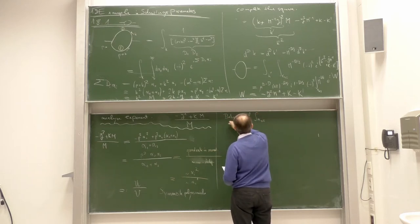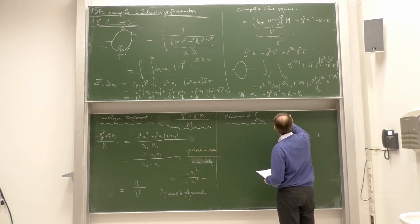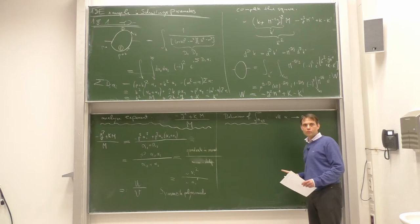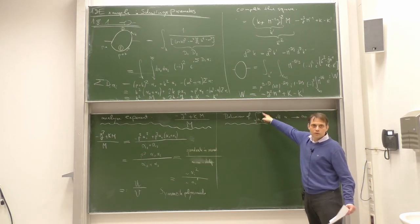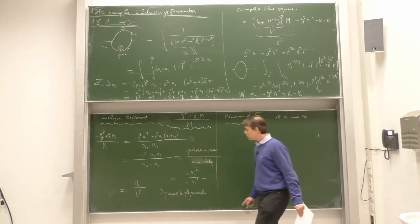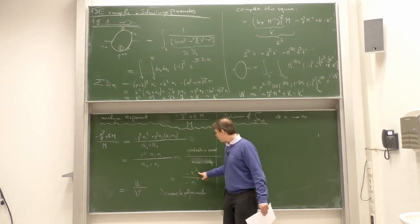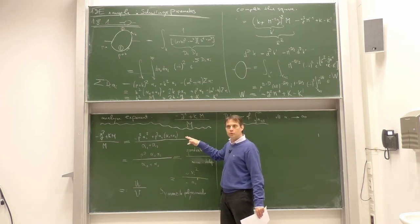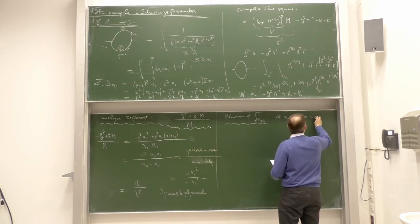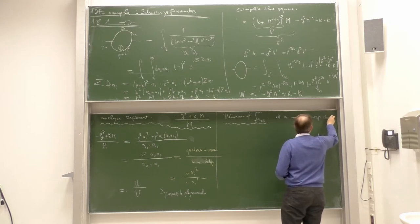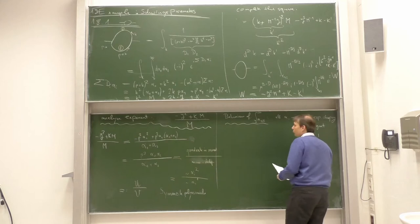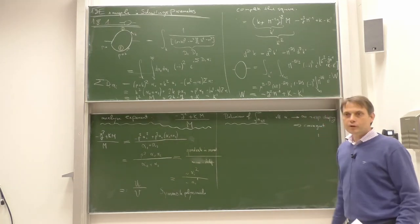The alpha integration always goes from 0 to infinity. What happens if the alphas all go to infinity? The Symanzik polynomials behave like alpha² and alpha, so the ratio goes like alpha to infinity. The exponent goes to infinity, and therefore we get an exponential suppression — exponential damping. Therefore the integral is convergent. No matter what the details are, at the upper limit of the alpha integration we never have a problem.